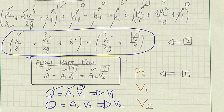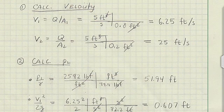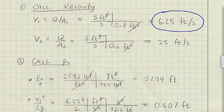So my plan is shown by these steps. Step 1, I'll use this equation to calculate the velocity at 1 and the velocity at 2. Step 2, I'll use this equation to solve for the problem goal, p2. The velocity at section 1 is 6.25 feet per second. The velocity at section 2 is 25 feet per second.